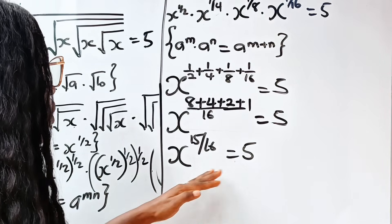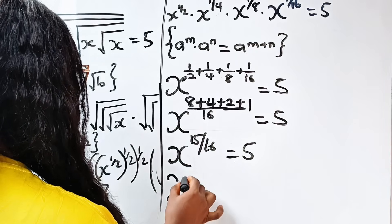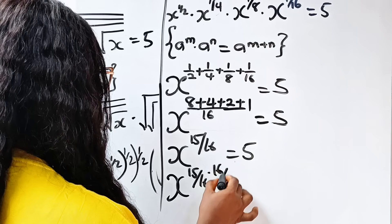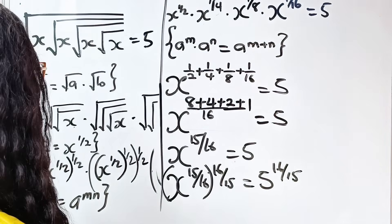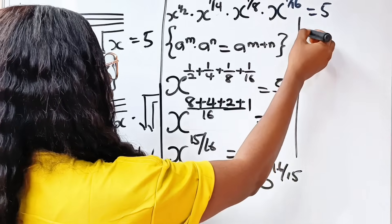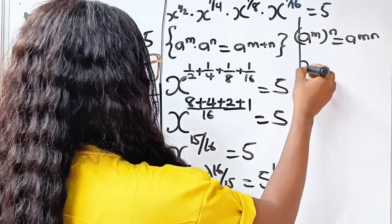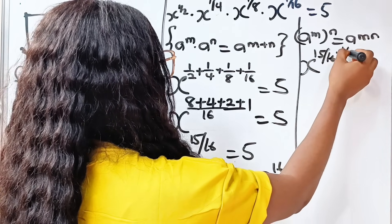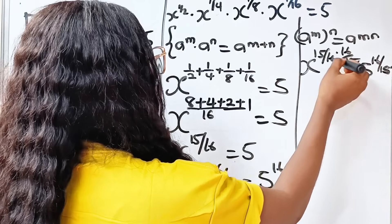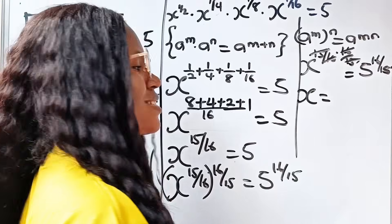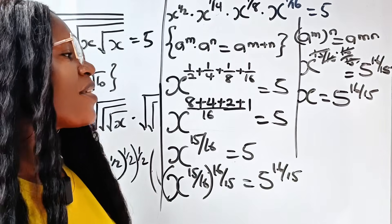To get the value of x, we raise each side to the power of 16 over 15 — the inverse. So x to the power of 15/16 raised to the power of 16/15 equals 5 to the power of 16 over 15. The 15/16 and 16/15 cancel, giving us x is equal to 5 to the power of 16 over 15. Thank you so much for watching, and see you in my next video. Bye.